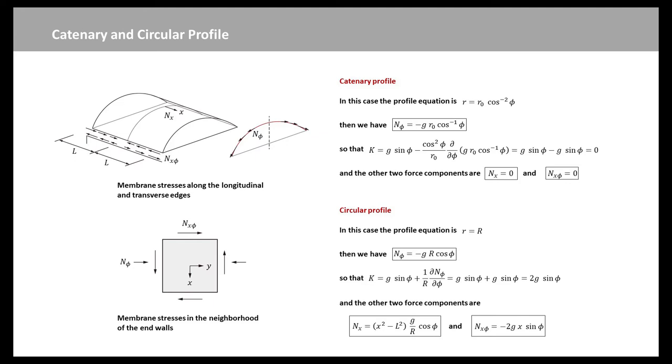Only shear forces Nx_phi equal to negative 2 times g times x act on these walls and increase linearly along the generatrices up to the value Nx_phi equals negative 2 times g times l at the transverse end walls.